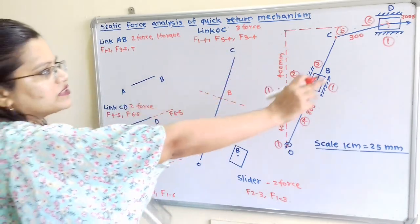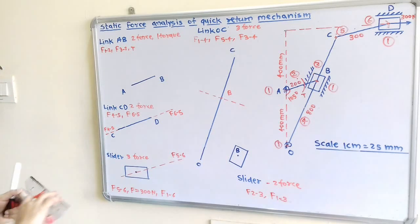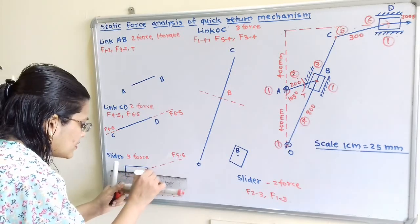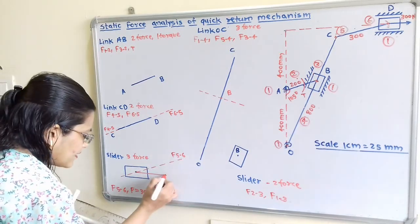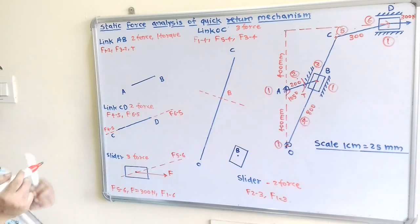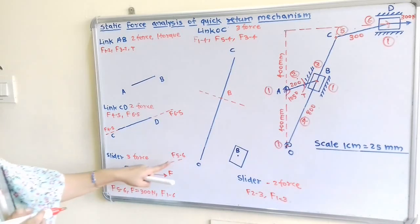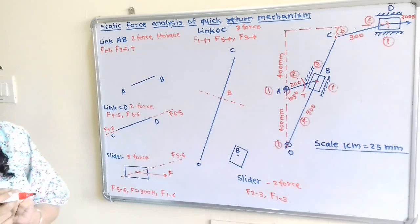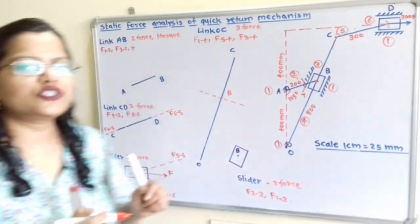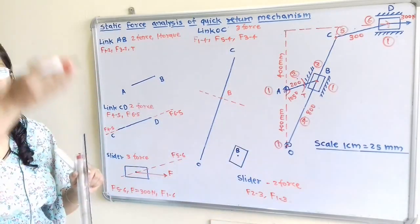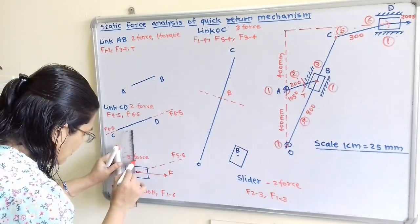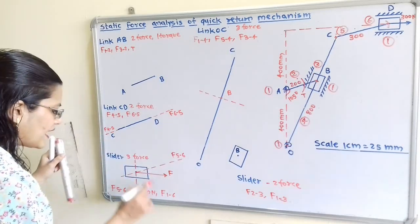The 300 N force shown in the question passes through the center of the slider towards the right-hand side — this is force F. The force F of 1 to 6 intersects the other forces at the center. Since motion is along the horizontal line, F of 1 to 6 acts in the vertical direction, perpendicular to the motion.